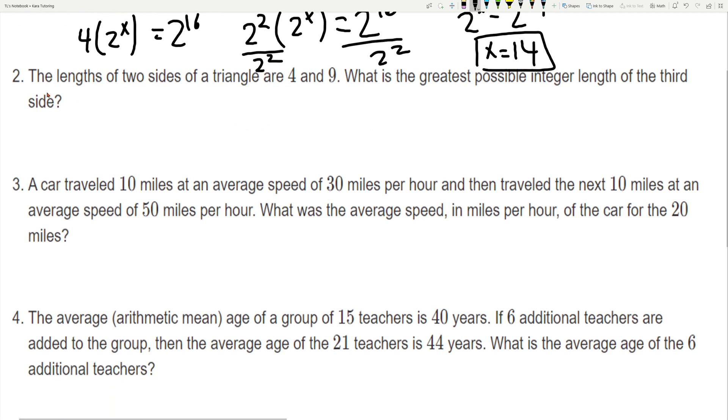Number two requires some knowledge of geometry. It requires the triangle inequality theorem which states that the sum of any two sides of a triangle must be greater than the third side. So if we have this and this 4 plus 9, if we're already given those, what is the greatest possible integer length of the third side? So like I just said, the third side cannot be equal or greater than this number 13. So the greatest possible integer would be 12.